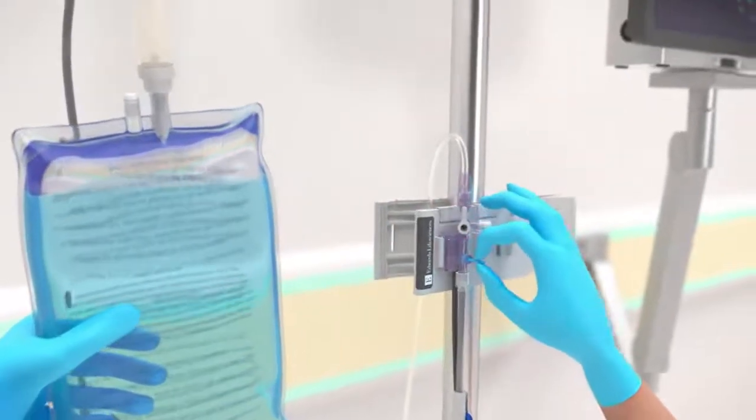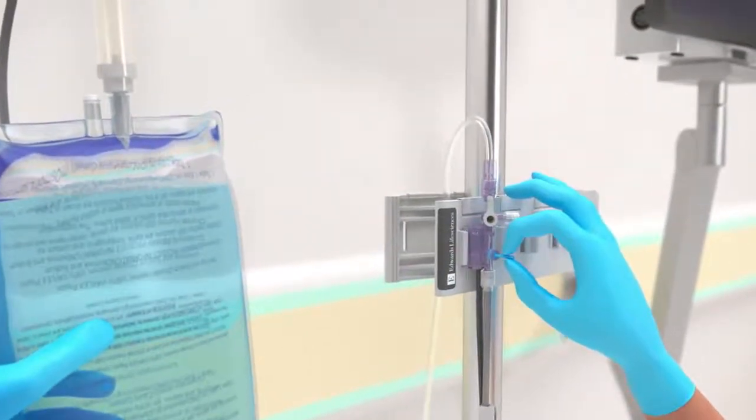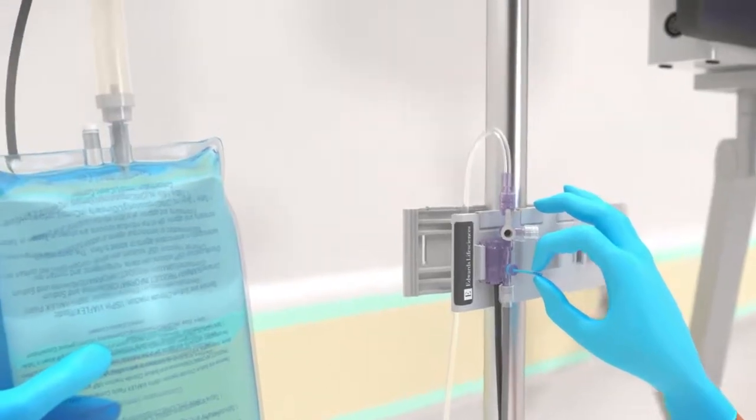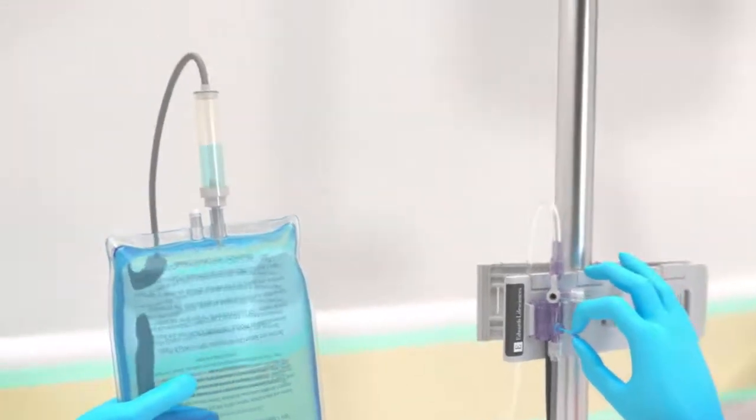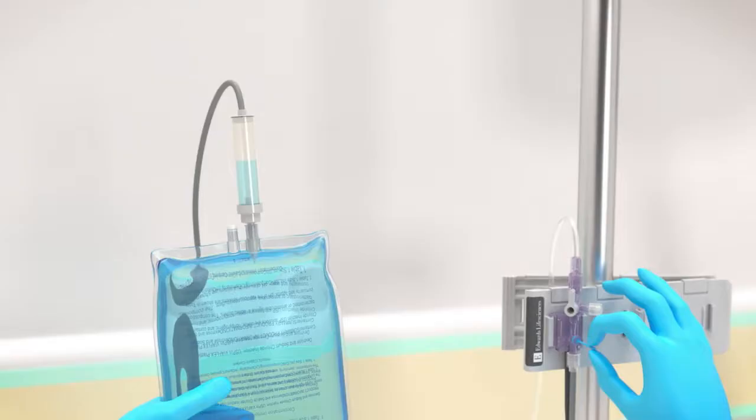gently squeeze air out of the bag with one hand while pulling the snap-tab flush device with the other hand until air is emptied from the IV bag and the drip chamber is filled at least half way, or per institutional policy.